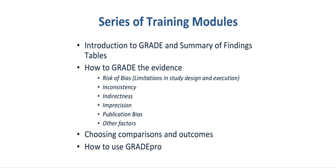This course is part of a series of training modules that include an introduction to GRADE and Summary of Findings Tables, how to grade the evidence, including the individual factors: risk of bias (also called limitations in study design and execution), inconsistency, indirectness, imprecision, publication bias, and other factors that determine the quality of a body of evidence. The course also includes modules on choosing outcomes and how to use the GRADE Profiler software, also called GRADEPro.